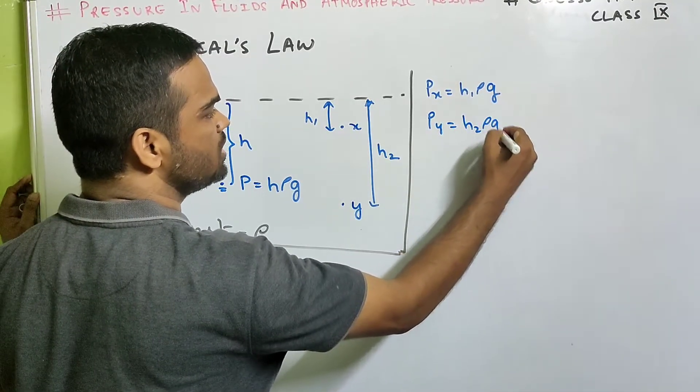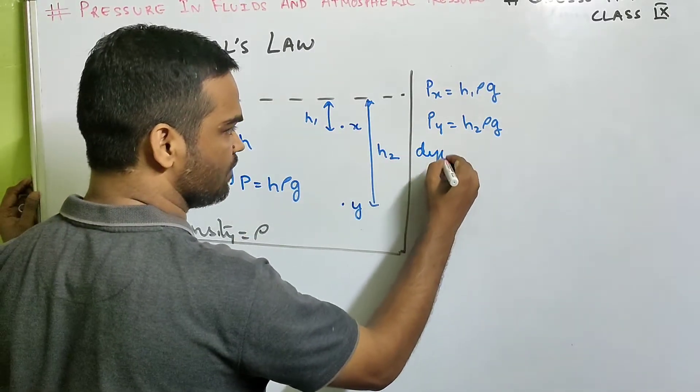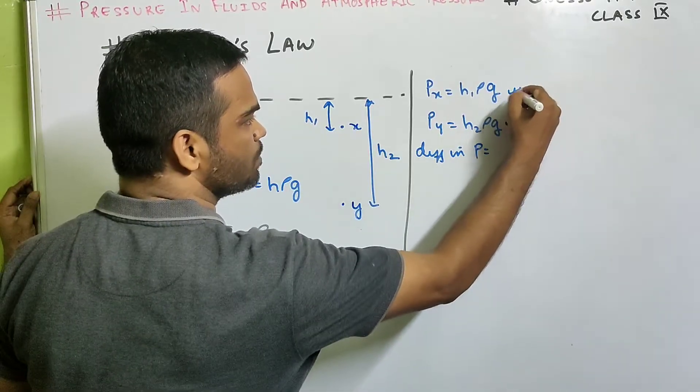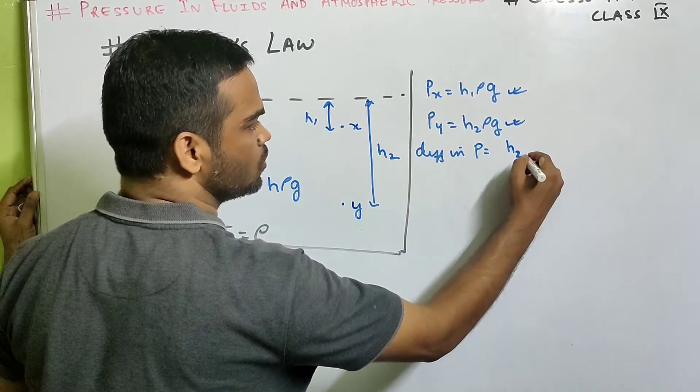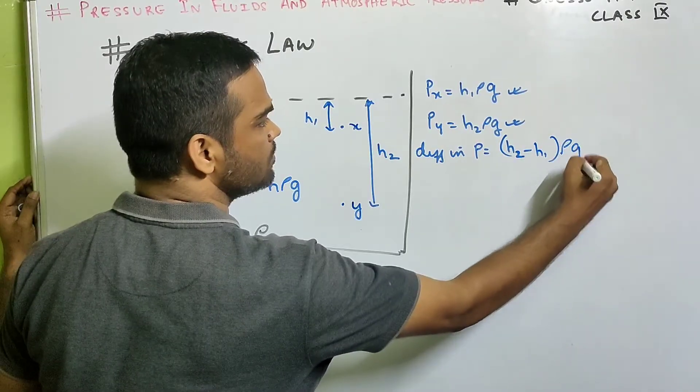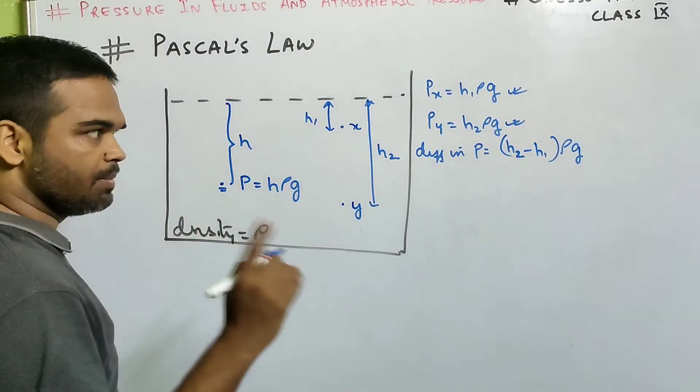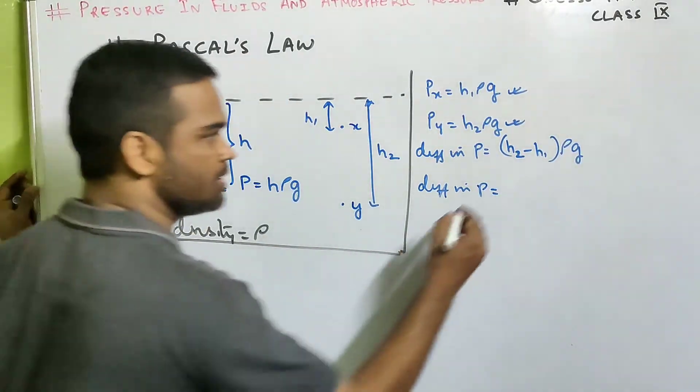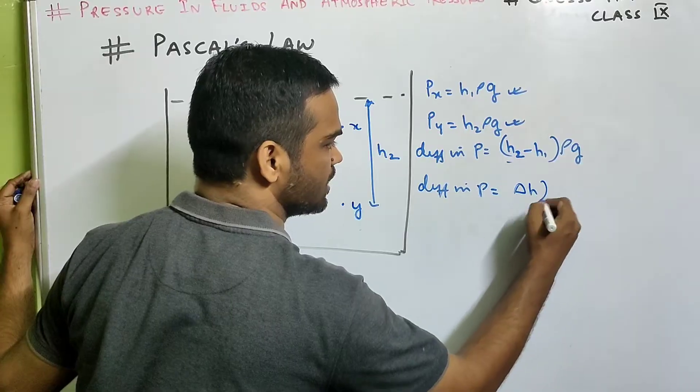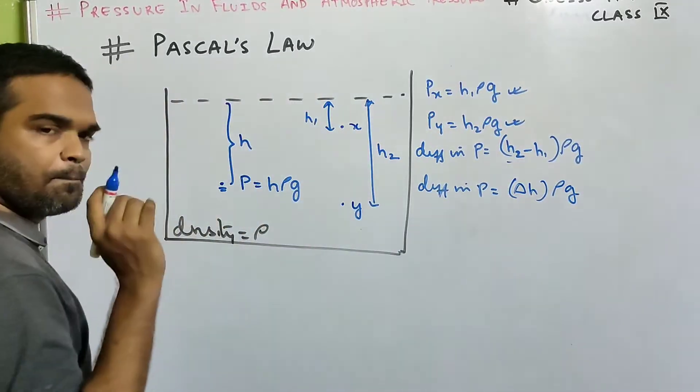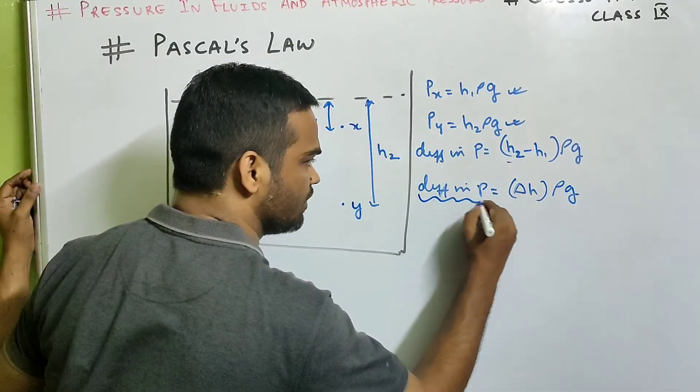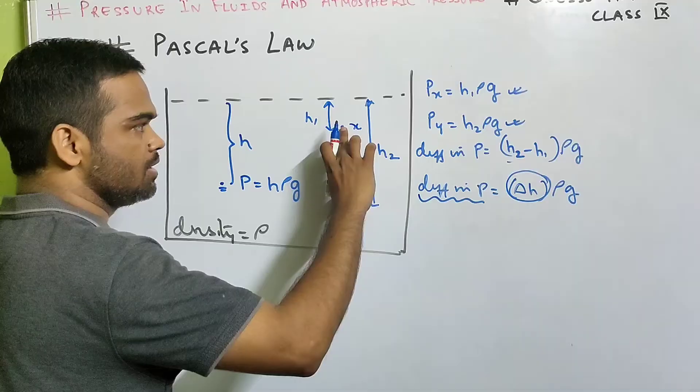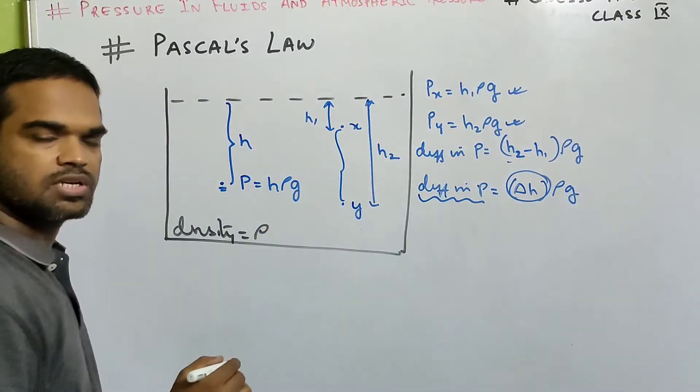h2 rho g. Then the difference in pressure, py minus px which is h2 minus h1 rho g, which means difference in pressure between two points. Suppose this is del h I am taking, the difference. Depends, this difference in pressure depends on the vertical height between these two points.